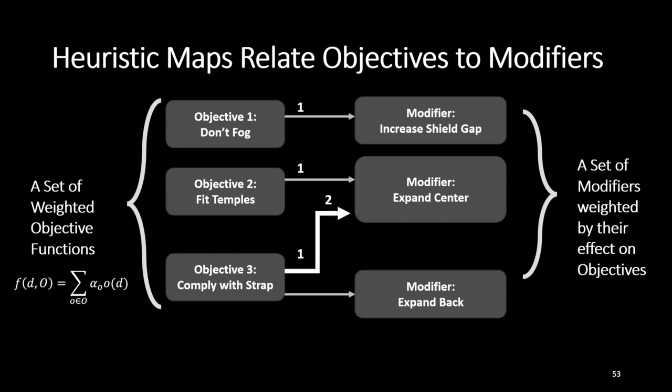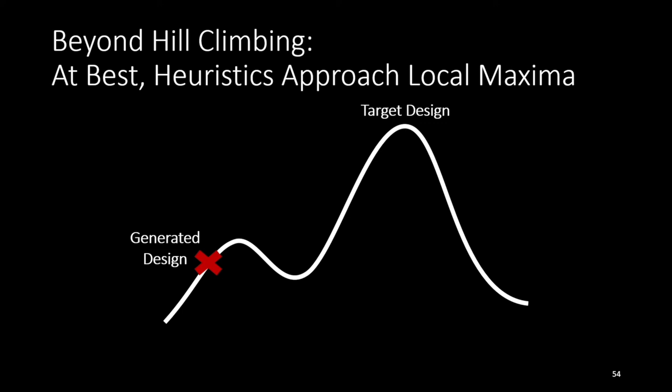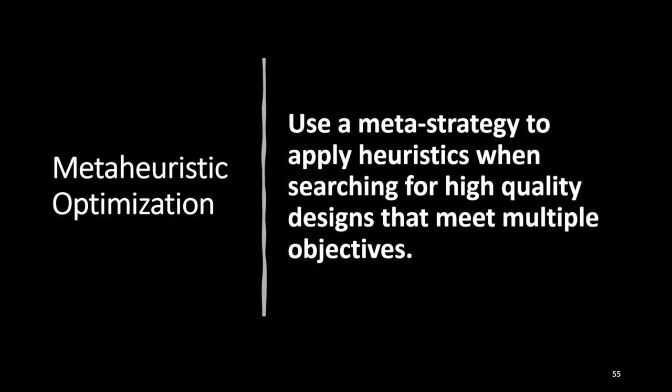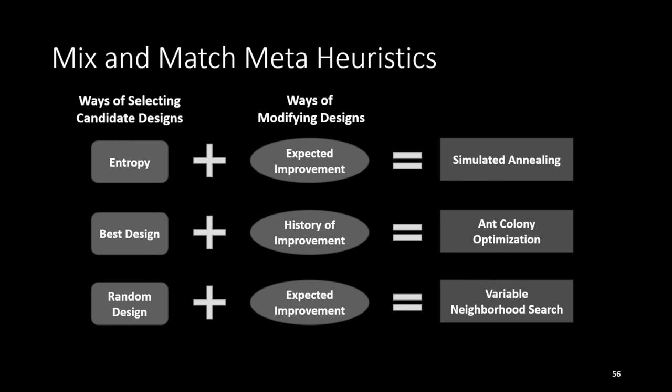Heuristics at best are going to help you approach a local maxima, and often they won't even lead to that. So we really need to be thinking beyond a very simple heuristic hill climbing option. This leads us to meta-heuristic optimization, which uses a meta strategy of applying heuristics while searching for high quality designs that meet multiple objectives. It allows you to strategically jump around the space in a more stochastic manner. If we break down meta-heuristic strategies into ways of selecting a candidate design at each iteration and ways of modifying that design, we can decompose classic meta-heuristic methods like simulated annealing, ant colony optimization, and variable neighborhood search. Optimum does this with a pluggable set of design selectors and modifier selectors in an extendable library.